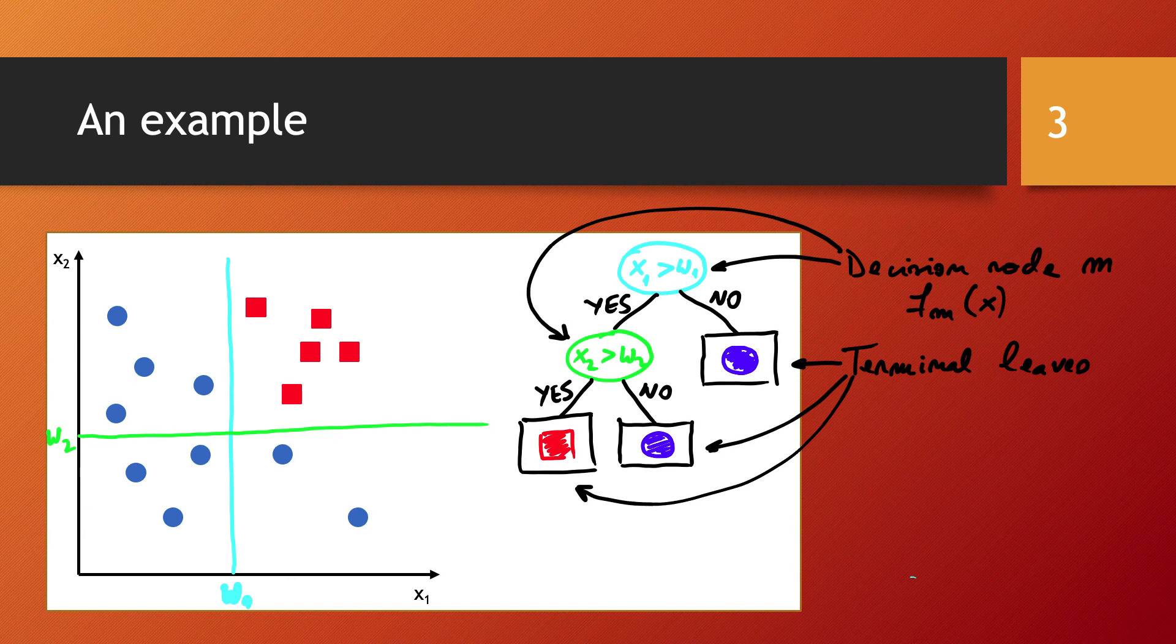Each test function fm defines a discriminant in a d-dimensional input space, dividing it into smaller regions that are further subdivided as we take a path from the root down. Each such test function is a simple function, and when written as a tree, a complex function is broken down into a series of simple decisions. Each leaf node has an output label, which in the case of classification is the class code, and in regression is a numerical value. A leaf node defines a localized region in the input space where instances falling in this region have the same labels in the case of classification, or very similar numeric outputs in the case of a regression problem. The boundaries of the regions are defined by the discriminants that are coded in the internal nodes on the path from the root to the leaf node.